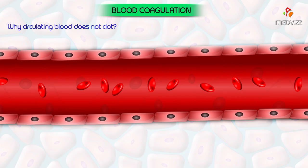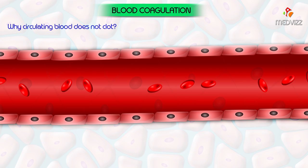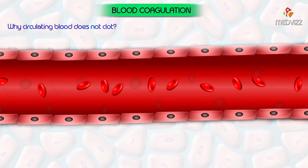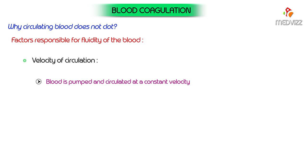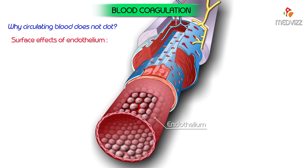Why does the circulating blood not clot? Blood circulating in the blood vessels does not clot, and the fluidity of blood is essential for life. Factors responsible for fluidity of blood include: velocity of circulation — blood is pumped into vessels and circulated at a constant velocity, which contributes to its fluidity; that is why a decrease in circulation velocity in certain conditions is associated with intravascular clotting.